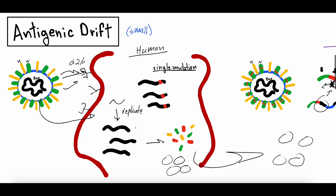That mutation then ends up packaged into all these new viruses that go out into the world and infect other cells. There are lots of different types of single mutations — silent ones, ones that cause changes in proteins, et cetera. The thing to note is that this single mutation might not do anything at all — it might just be the same exact virus. But there's a chance that mutation could lead to a protein that's slightly different on the new virus. If the neuraminidase receptor was all green before, it might now have a red portion — that's the mutation.